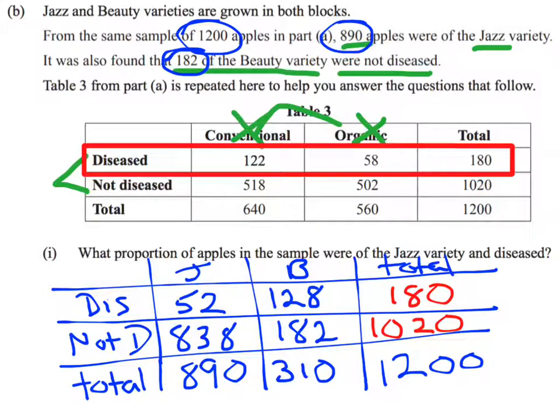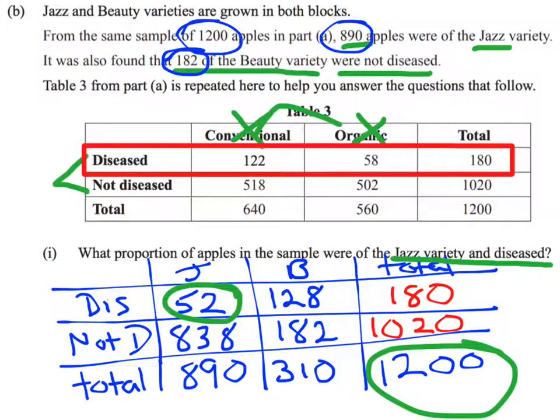So there is my table. I've put all the information together. Now I'm going to look at the question to remind myself what it was asking. It's asking what proportion of apples in the sample, so from the total, were of the Jazz variety and diseased. Jazz and diseased, well, we've got 52 that are Jazz and diseased. So let's write that up.